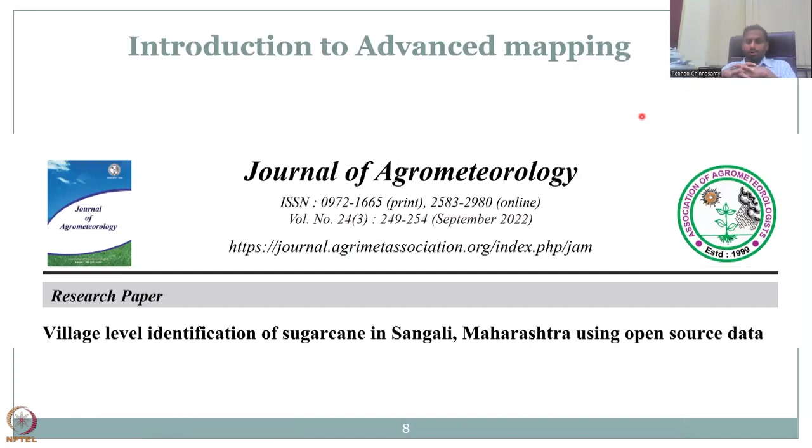It is an Indian journal, mostly through the Association of Agrometrologists. Almost all agriculture universities are subscribing to this because it's a government journal, Association's journal. And you could see that it talks a lot on the application. And one key application is the GIS application. And the paper we will be discussing just quickly on the advancement of data is the village level identification of sugarcane in Sangli, Maharashtra, using open source data. Why sugarcane in Maharashtra? Sugarcane belts are there in Maharashtra. A lot of land is under sugarcane cultivation, especially in Sangli.